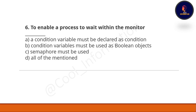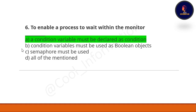Question 6: to enable the process to wait within the monitor, a condition variable must be declared as condition. Option A: condition variable must be declared as condition. Option B: condition variable must be used as boolean objects. Option C: semaphore must be used. Option D: all of the mentioned. The correct option is A — a condition variable must be declared as condition.